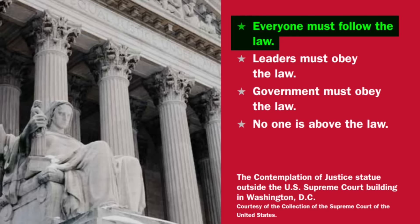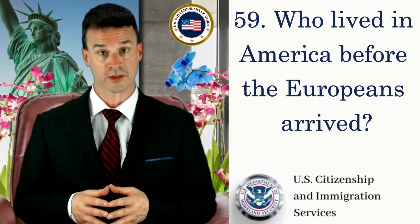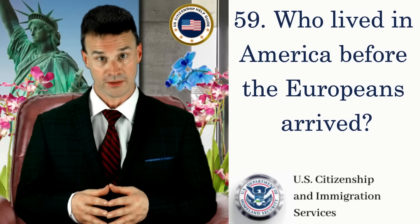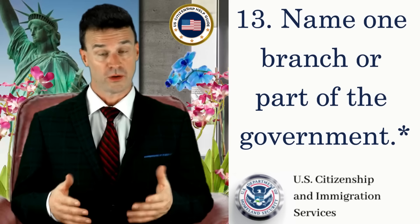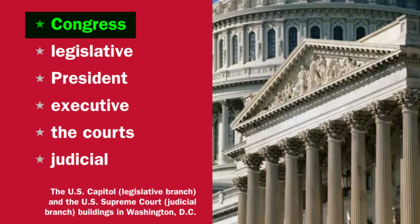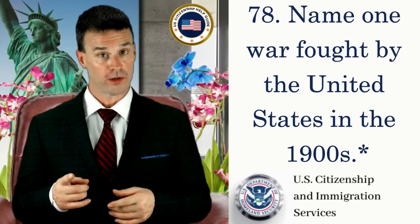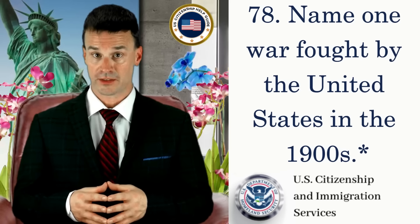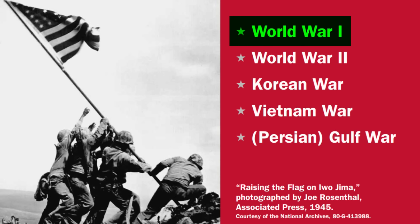What is the rule of law? Everyone must follow the law. Who lived in America before the Europeans arrived? American Indians. Name one branch or part of the government. Congress. Name one war fought by the United States in the 1900s. World War I.